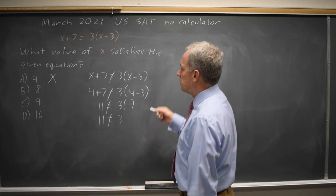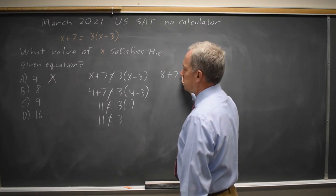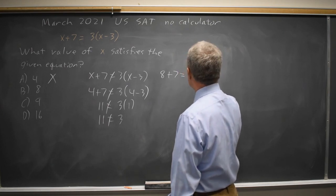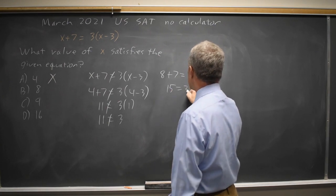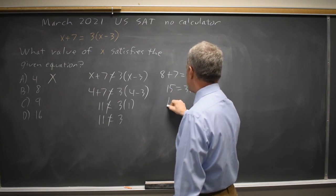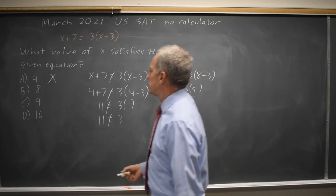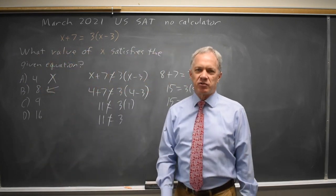If I try choice B, I have 8 plus 7 equals 3 times 8 minus 3, so 15 equals 3 times 5, or 15 equals 15. And that is correct, so the correct answer is choice B. I don't have to plug in the other two because I already found the right answer.